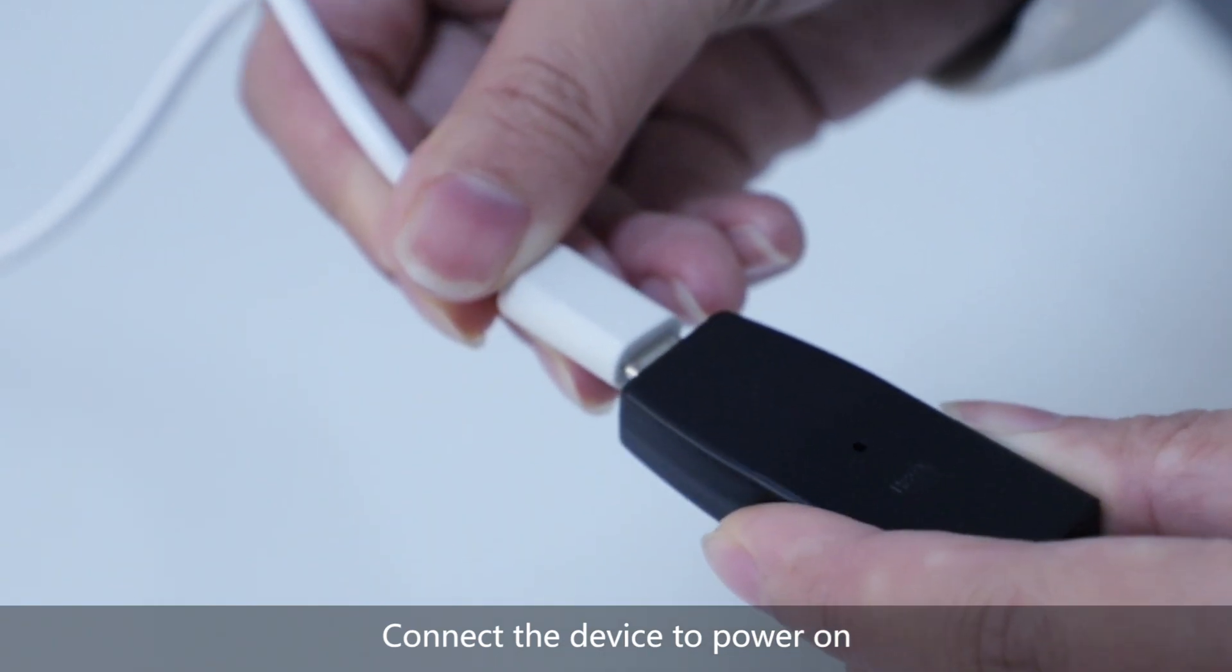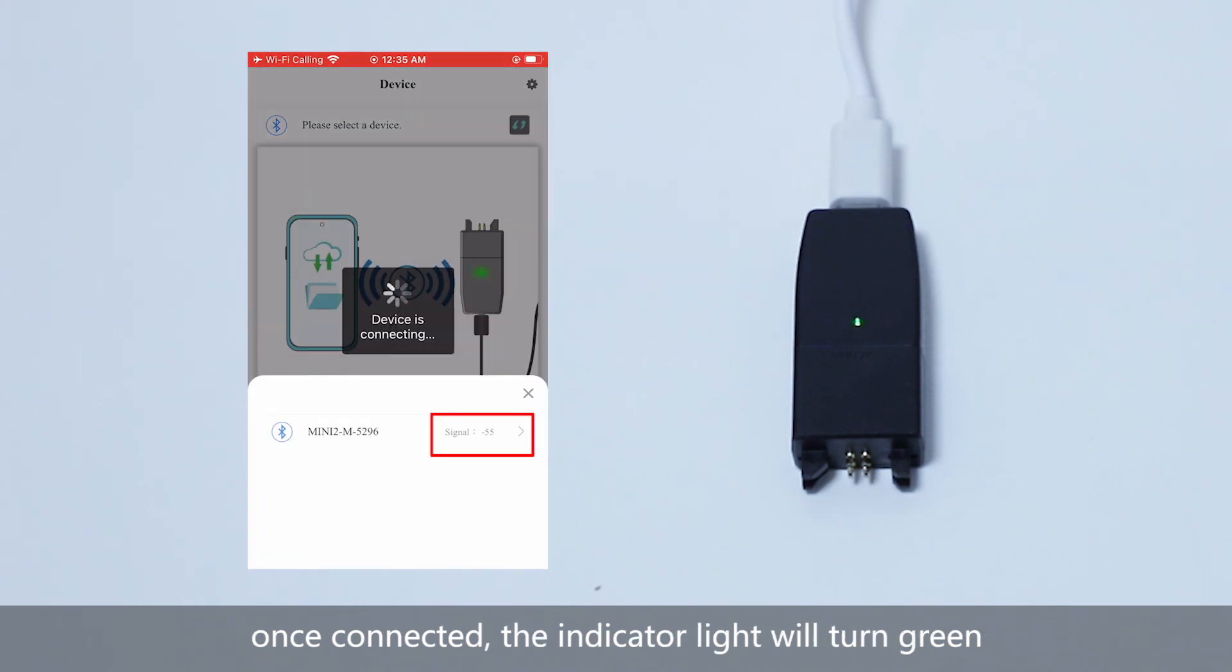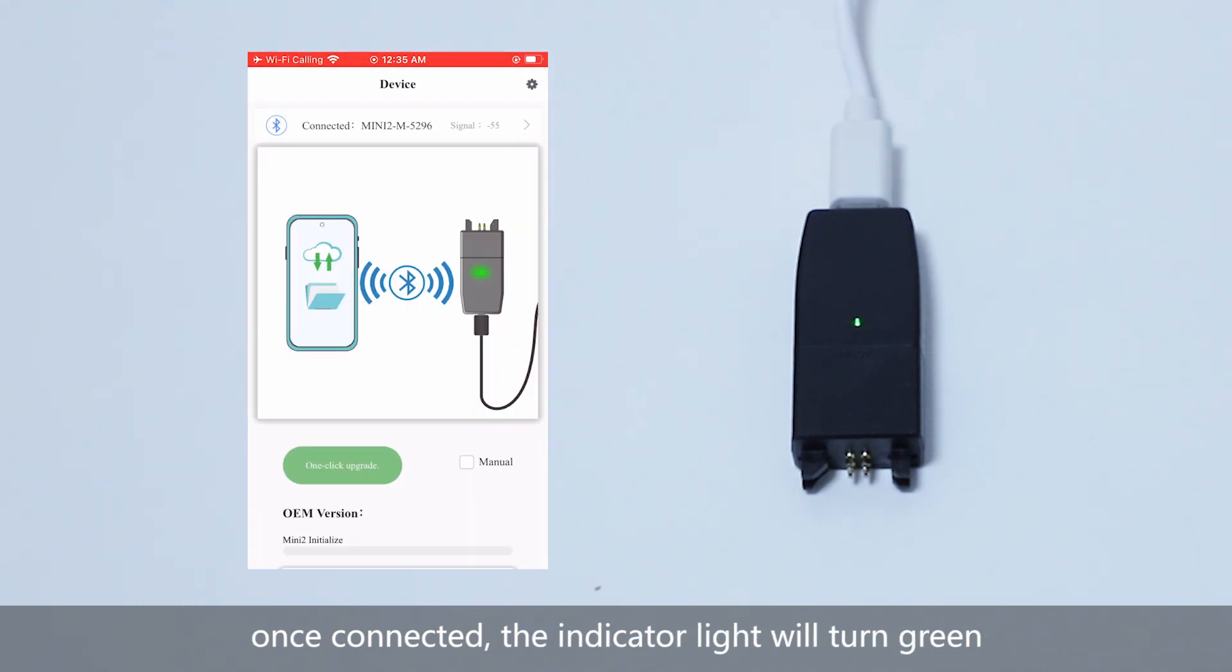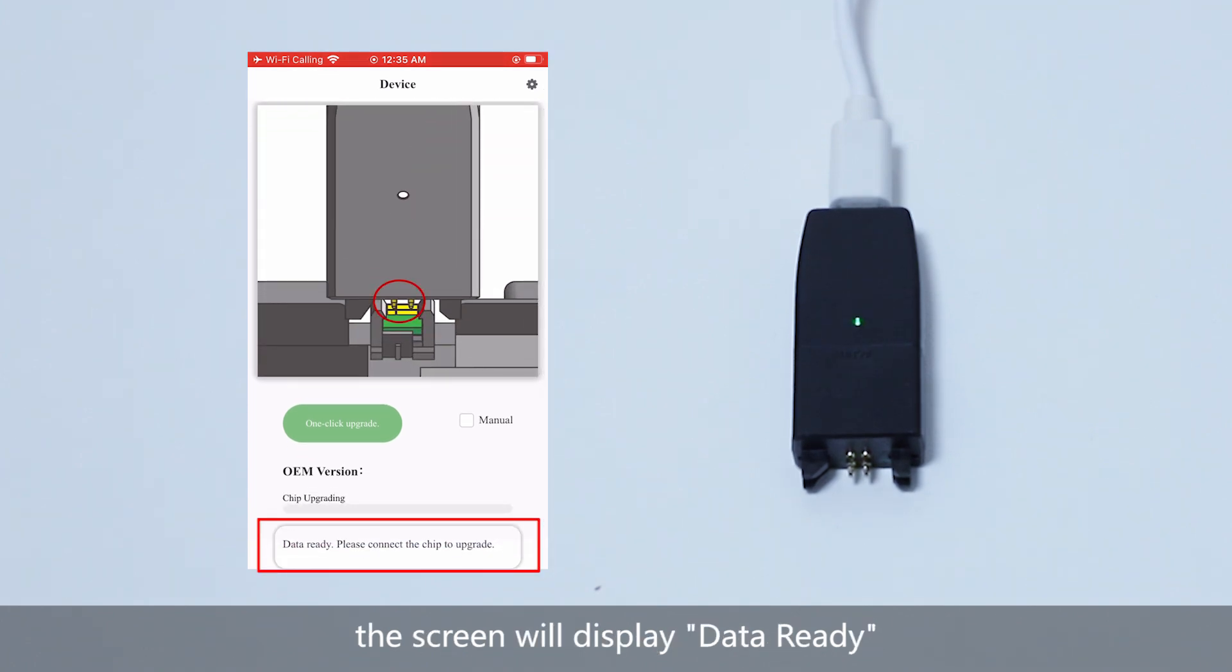Connect the device to power it on. Tap the Connect button to link your device to the app. Once connected, the indicator light will turn green. Wait for the loading; once the upload is successful, the screen will display data ready.